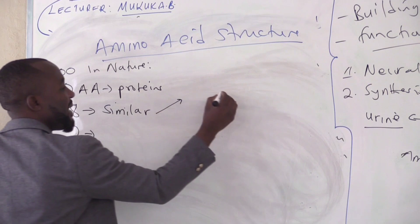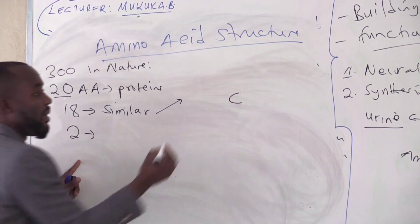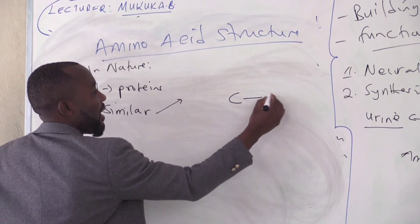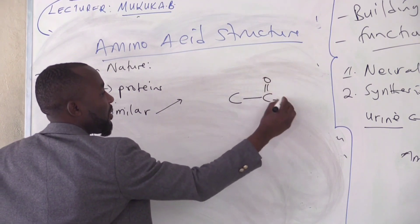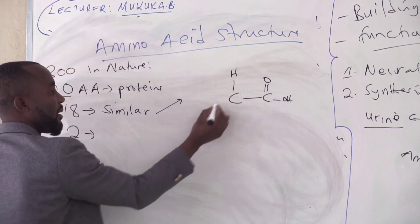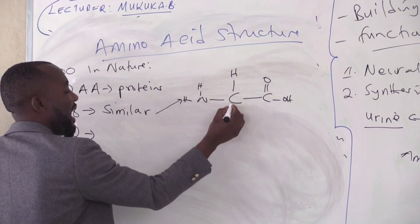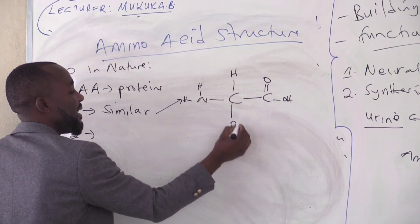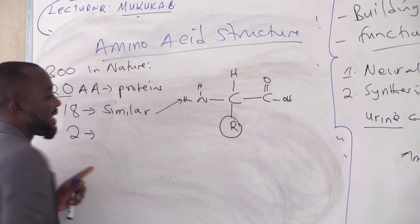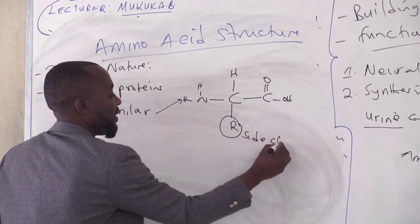18 of the amino acids are basically made up of carbon that is bonded to carboxyl group, hydrogen atom, amino group, and what makes them different is what I can designate as R group, which is also called the side chain.